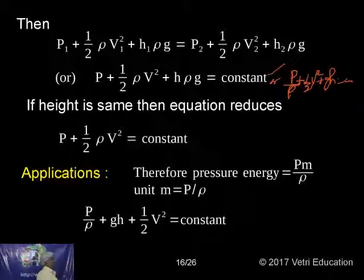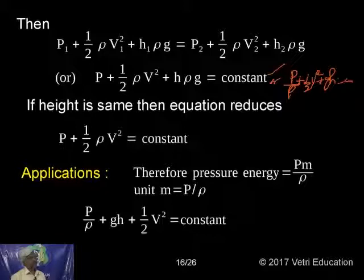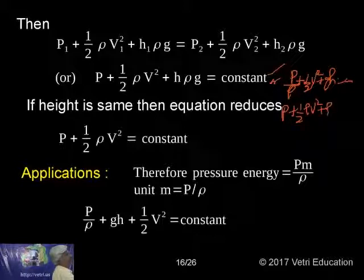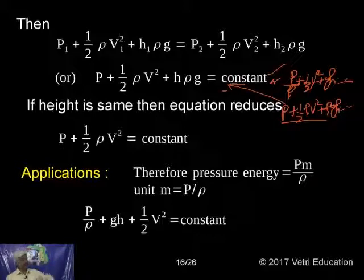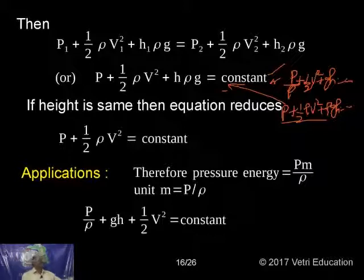Additionally rho comes in. If you multiply rho throughout: this rho cancels giving P plus half rho V squared plus rho GH equals constant. You need not confuse yourself — in our book it is P by rho plus half V squared plus GH, or equivalently half V squared plus GH plus P by rho equals constant. Multiplying throughout by rho, the formula modifies. If height is the same, H1 and H2 won't appear; therefore P plus half rho V squared equals constant.